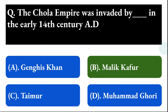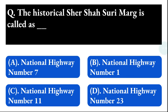Next question: the historical Sher Shah Suri Marg is called — option A: National Highway number 7, option B: National Highway number 1, option C: National Highway number 11, option D: National Highway number 23. The correct answer is option B, National Highway number 1.